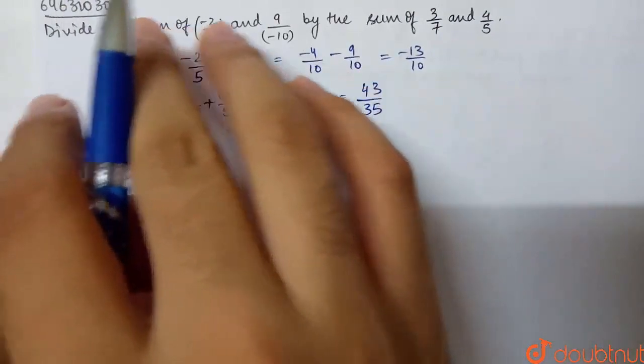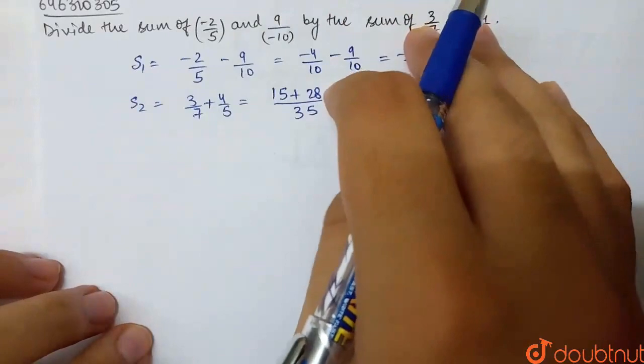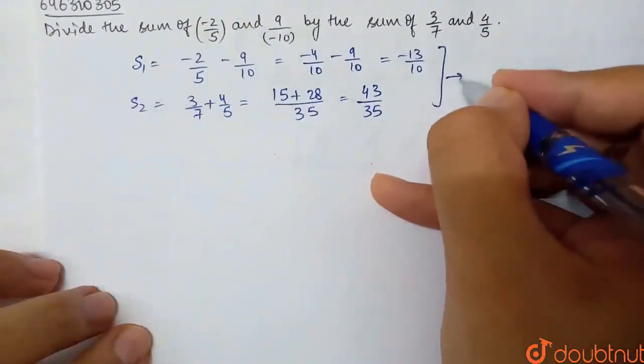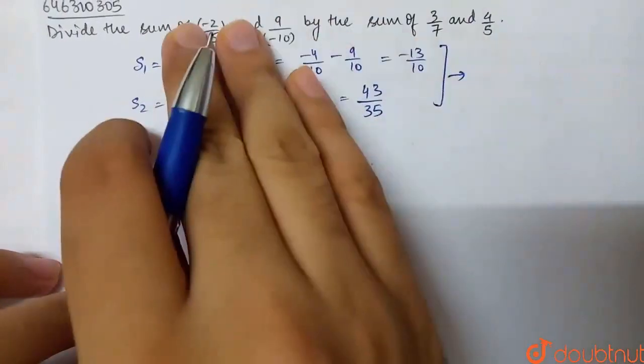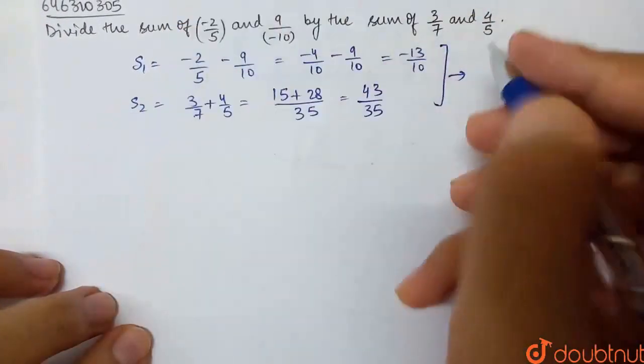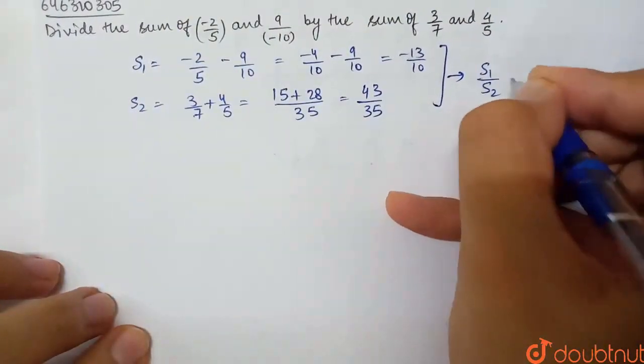Sum 1 is, we have to divide the sum of this by the sum of this. Basically, I will take S1 by S2. Find out.